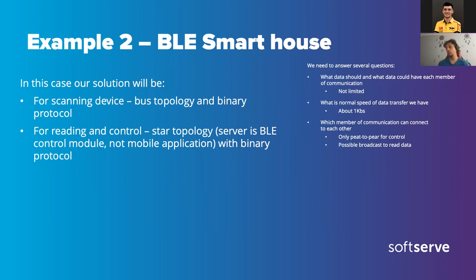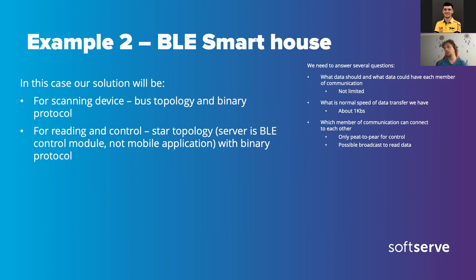For reading and control in the BLE smart house, we use star topology — but in this case, our mobile device is the center of the star. It uses binary protocol to connect to each BLE module.